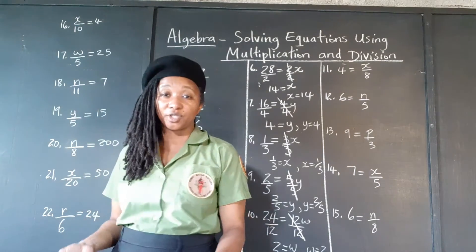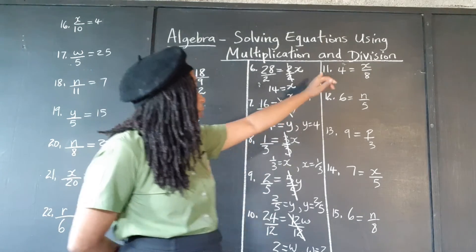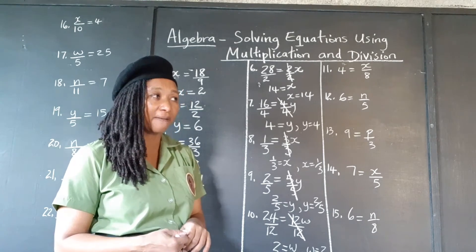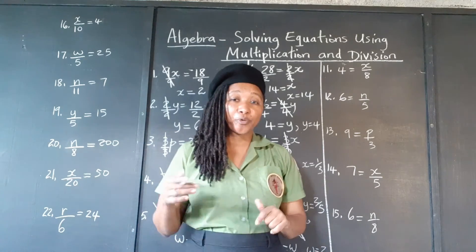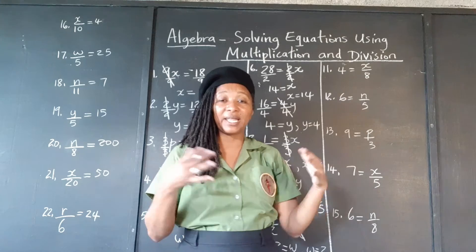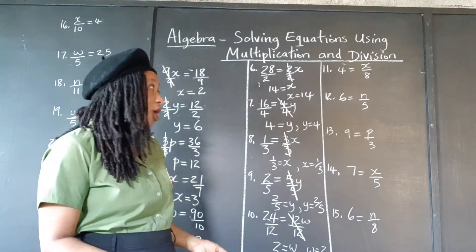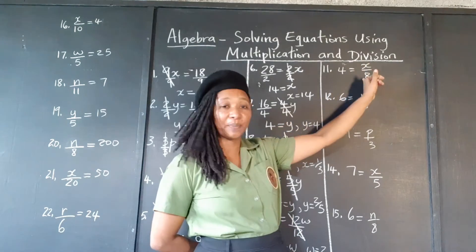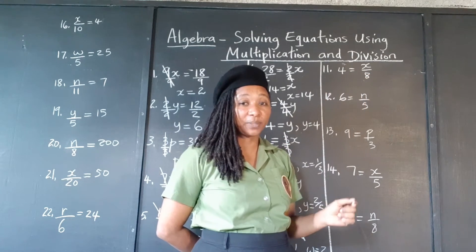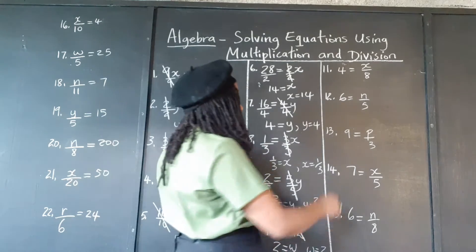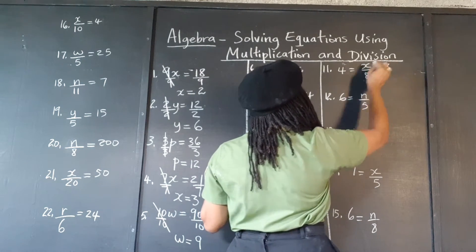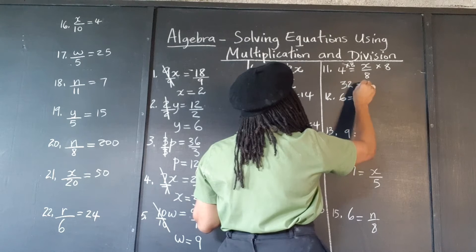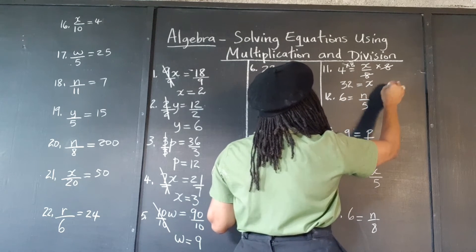Now let's look at some division equations. We're saying 4 is equal to x divided by 8. We're going to do the same principle — we want to isolate the x. We're going to do the opposite operation of what was being performed on x. We were dividing x by 8, and the opposite of dividing is multiplying. So we need to multiply both sides by 8. We're multiplying both sides by 8, ending up with 32 on that side. These cancel themselves out. x is 32.